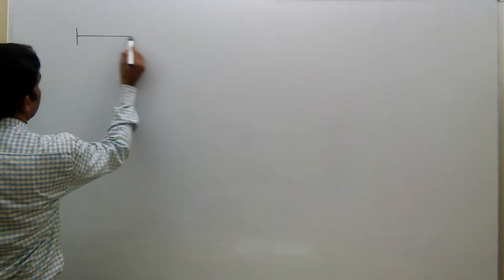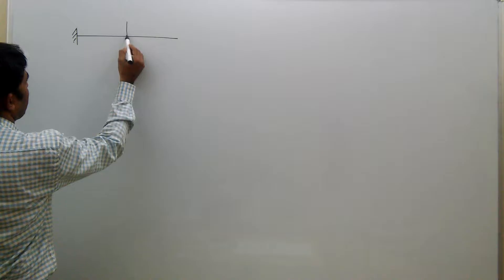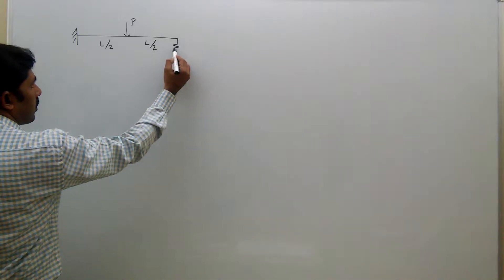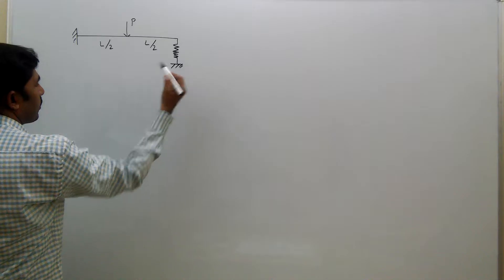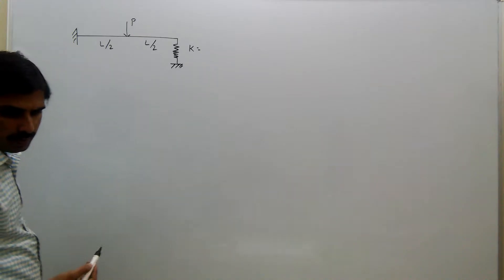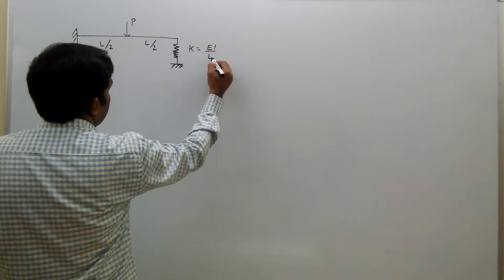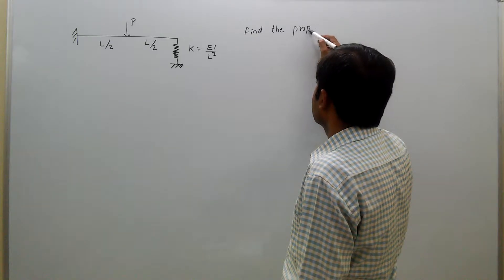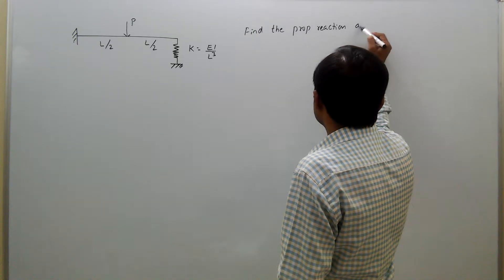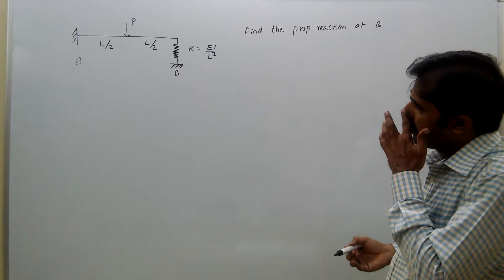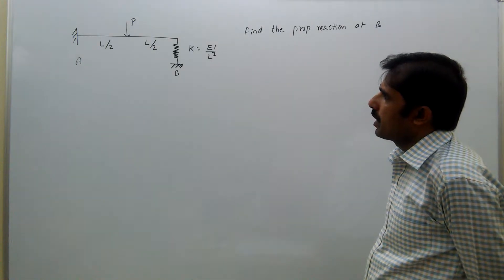A propped cantilever is supported by a spring having spring constant k equal to a divided by l cube. Find the proper reaction at B. We need to check compatibility here.